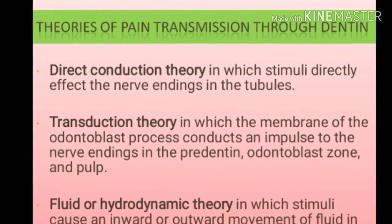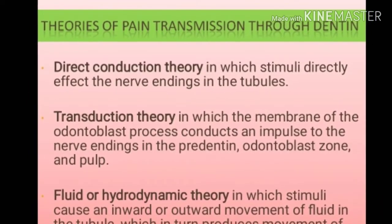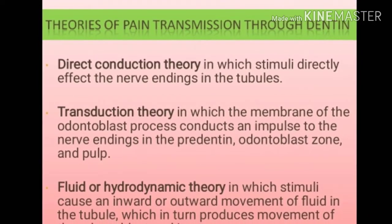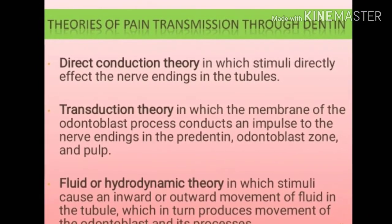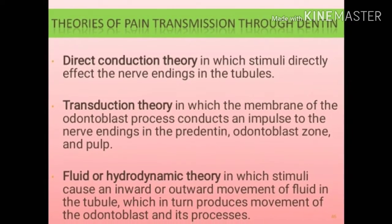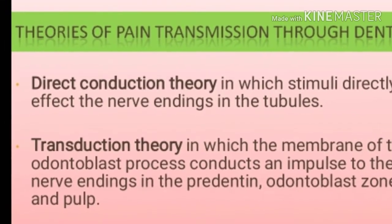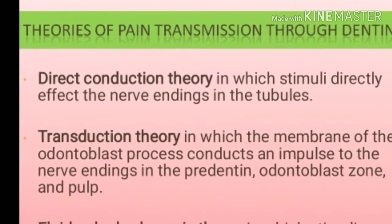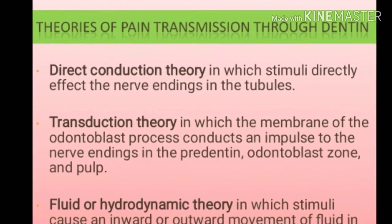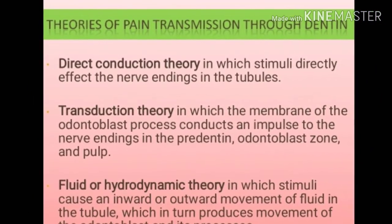In the direct conduction theory, the stimuli directly affect the nerve endings in the tubules. In the transduction theory, the membrane of the odontoblast processes conducts an impulse to the nerve endings in the pre-dentine, odontoblast zone, and the pulp. In the fluid or hydrodynamic theory, the stimuli cause an inward or outward movement of the fluid in the tubule, which in turn produces movement of the odontoblast and its processes.